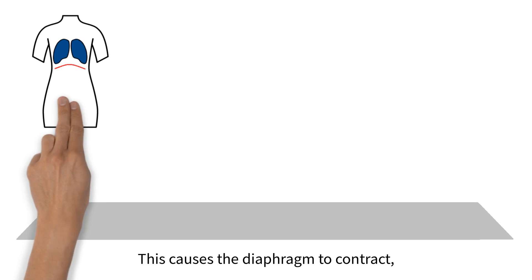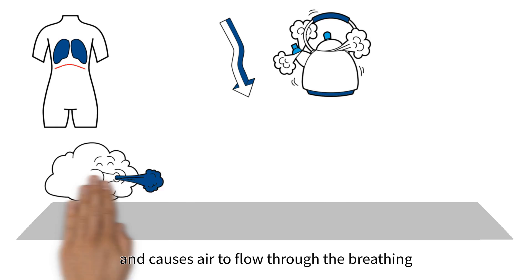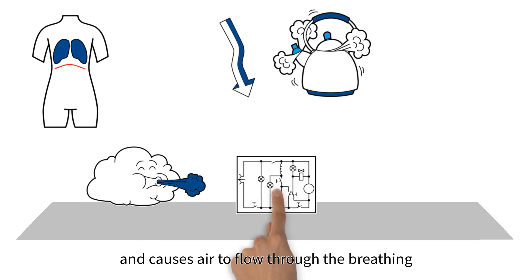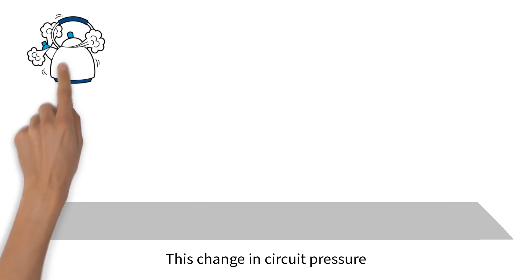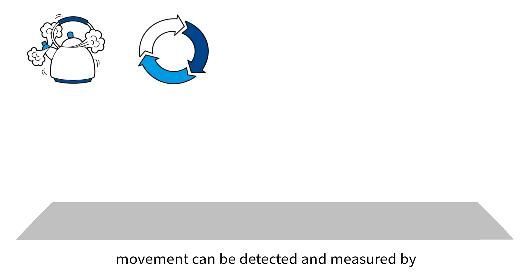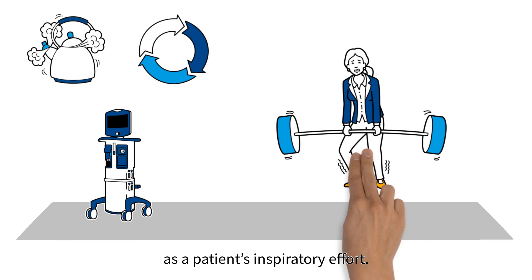This causes the diaphragm to contract which reduces the pressure in the airways and causes air to flow through the breathing circuit toward the patient. This change in circuit pressure movement can be detected and measured by the ventilator and interpreted as a patient's inspiratory effort.